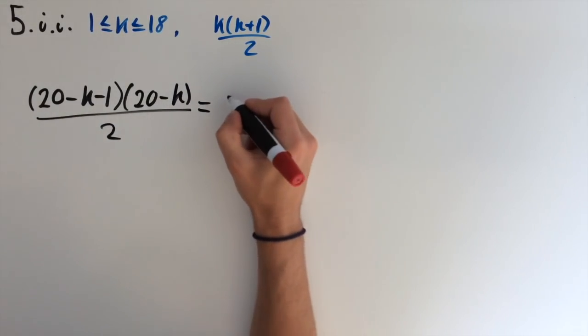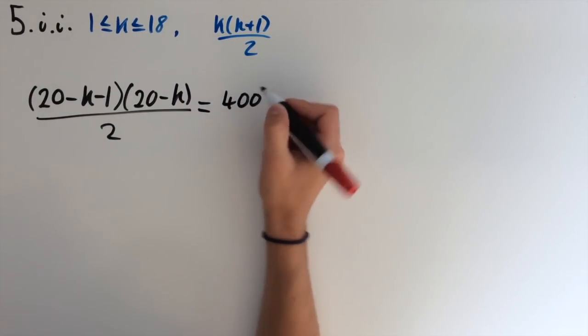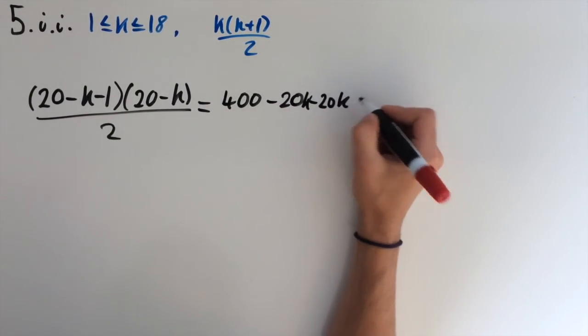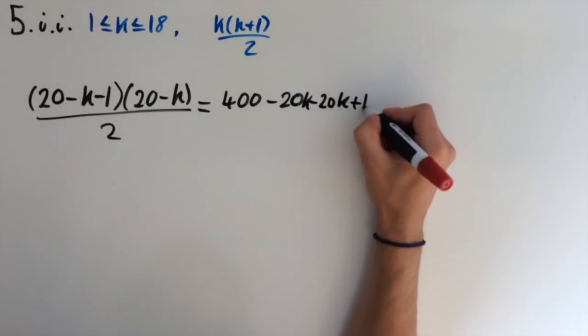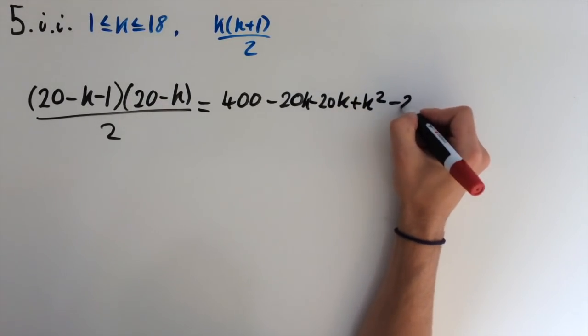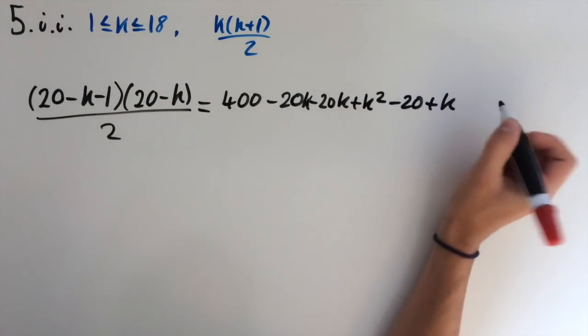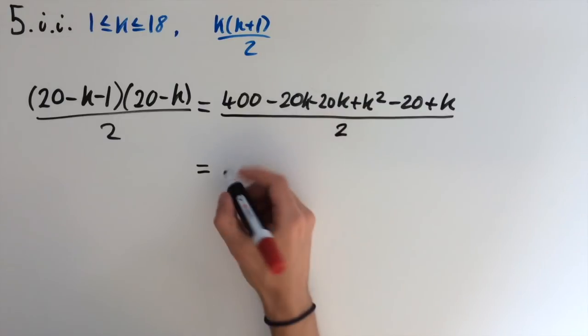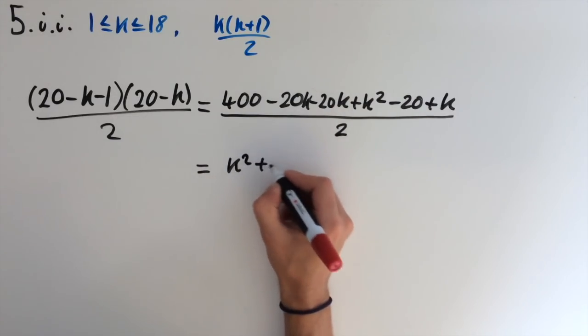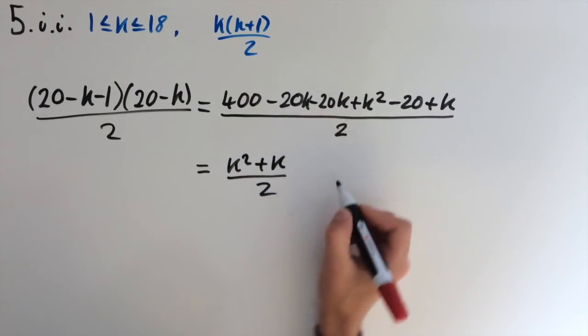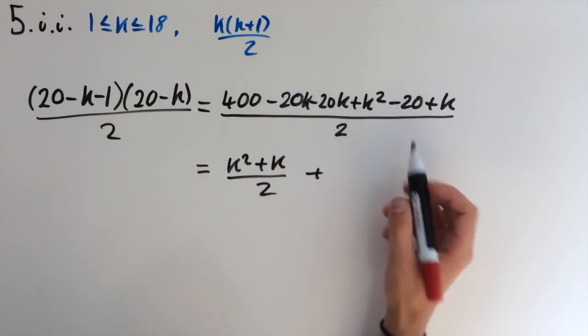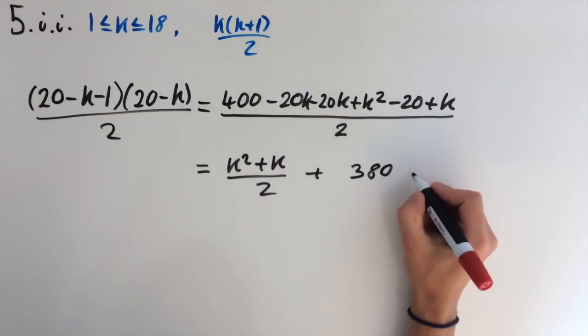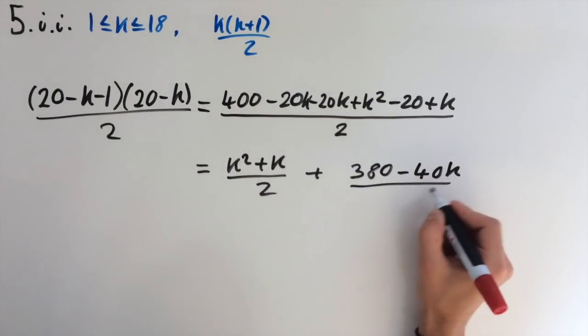So I'm going to expand these brackets now. We'll get 400 minus 20k minus 20k and plus k squared minus 20 plus k, and this is all over 2. So if I take out the k squared and the k, and I'm just going to bring it to the front, k squared plus k over 2, and we're left with 400 minus 20, which is 380, and then we have minus 40k. So this is over 2.